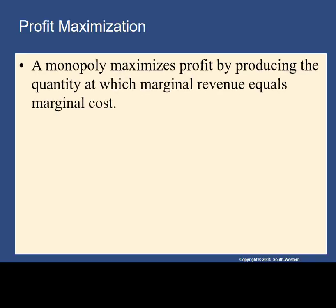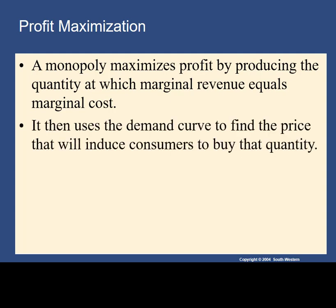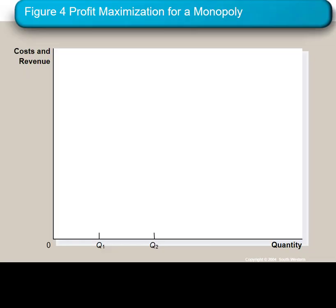We know that monopolists are maximizing profits, and the key idea is to find that quantity where marginal revenue is equal to marginal cost. Remember, there's a two-step process for the monopolist: first, find the quantity that's going to maximize profits, and then after you find that quantity, go up to the demand curve to find the price that the monopolist can at most charge to sell all of those units.